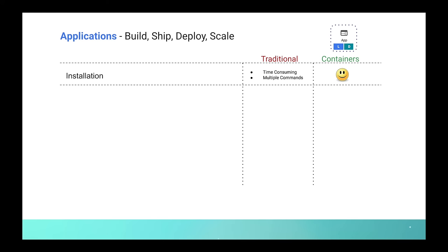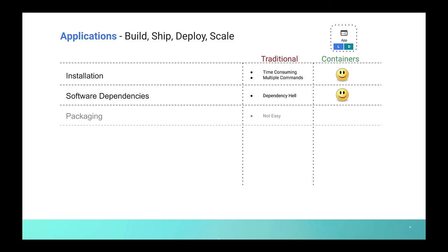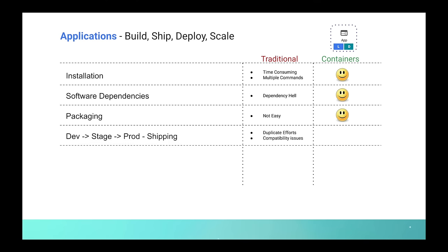As discussed, software dependencies are a huge issue in the traditional deployment model. Containers package all dependencies within the container and isolate them, making them easy to manage. Containers can also be moved from one system to another — you can easily ship the software without duplicate efforts and resolve compatibility issues. Containers also provide process isolation, which helps improve security as well.